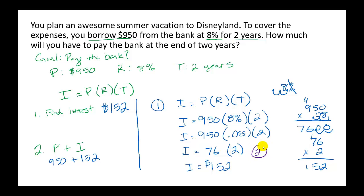So step 2, we have 950 plus 152 to 10, 9, 10, 11. Which means the principal and the interest together, the total amount that you have to pay back is $1,102.